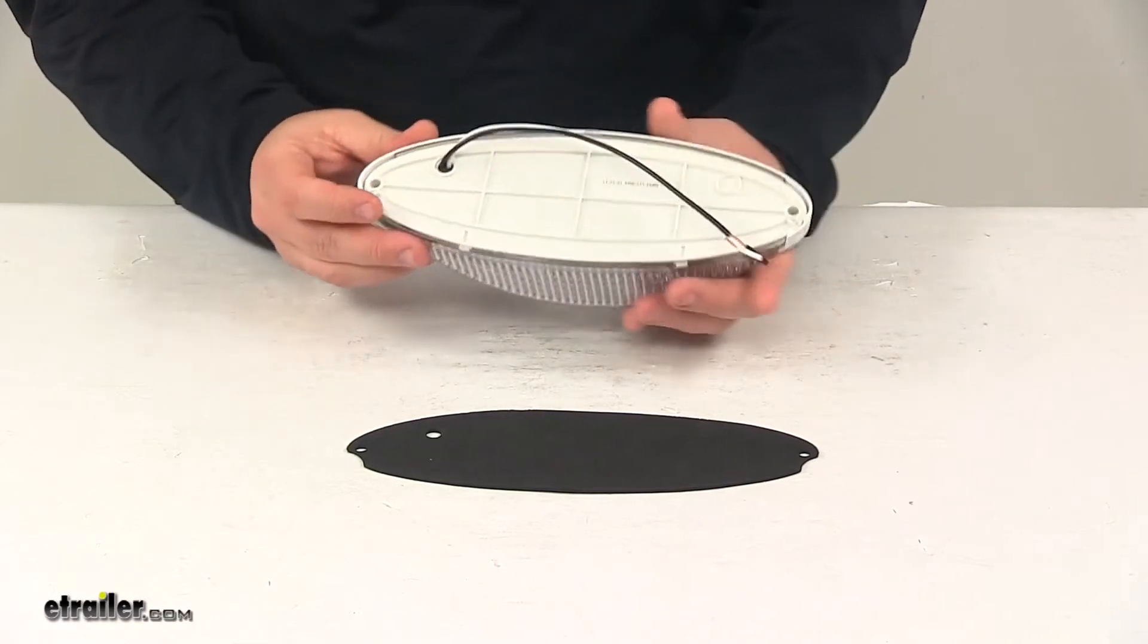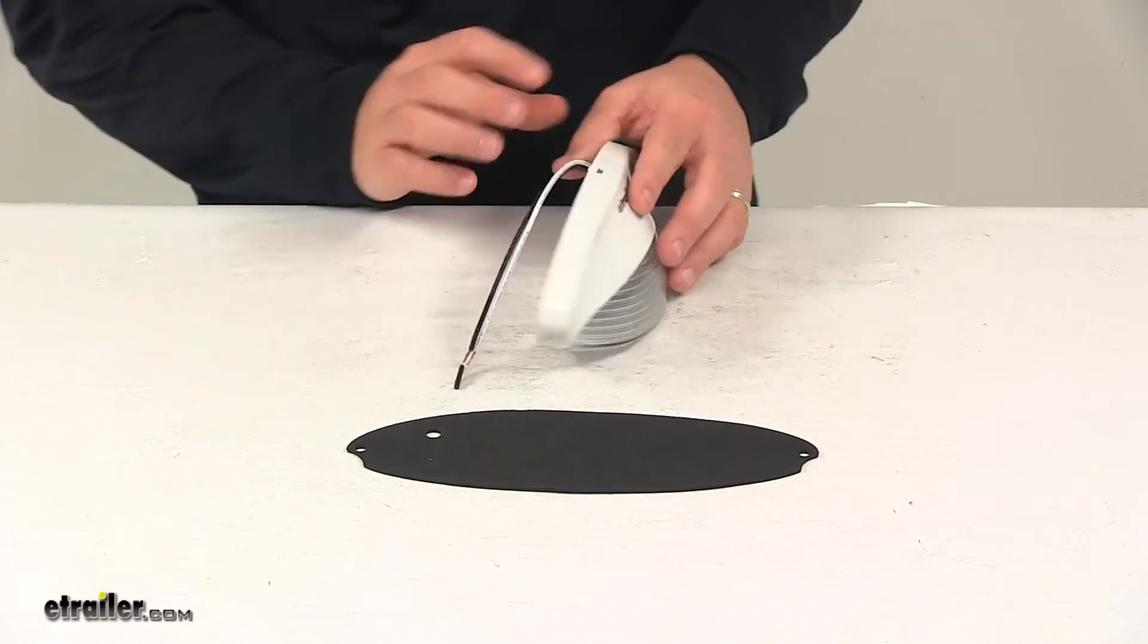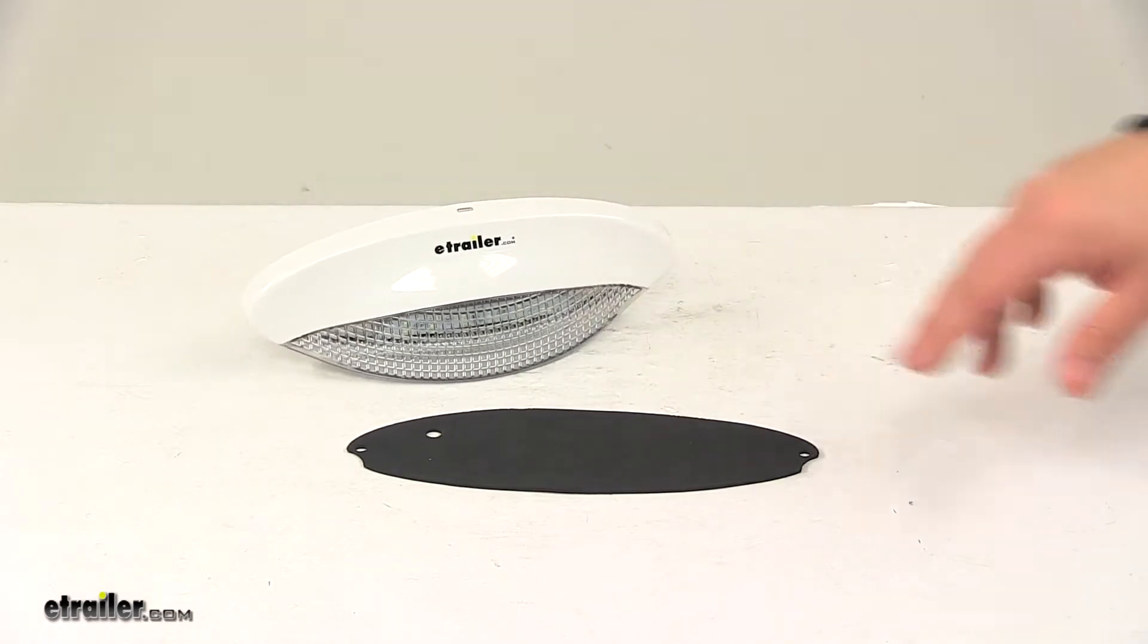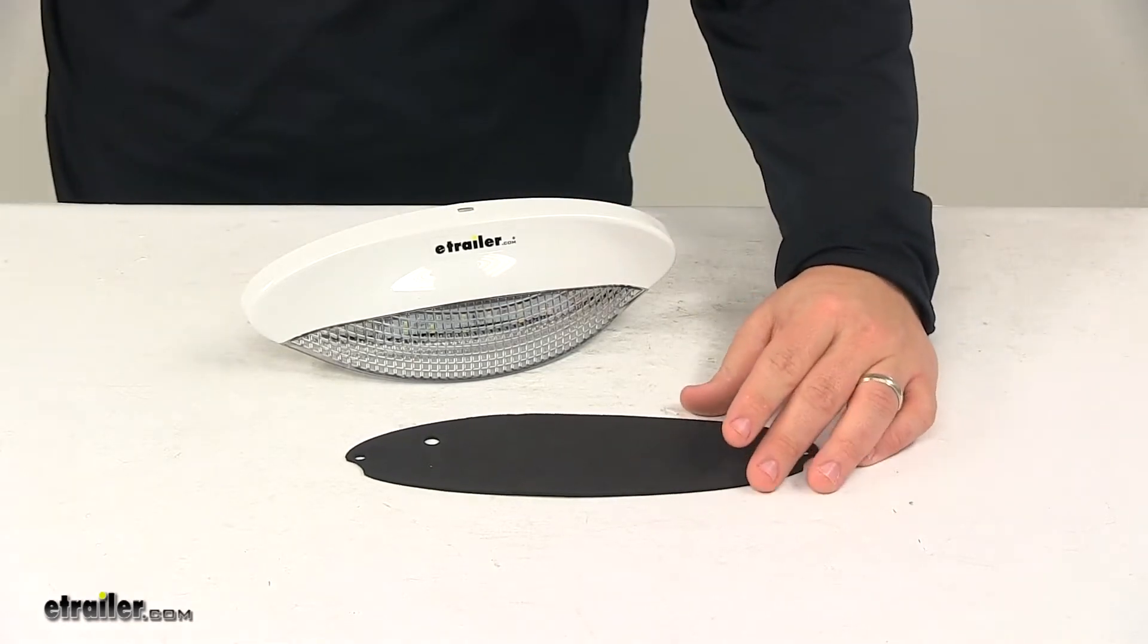When it comes to the installation, it's a surface mount installation so you've got your mount holes located right here. Now to gain access to those mount holes you just need to pop off that white plastic piece on the front there. It comes with that gasket which is that foam piece and that provides some cushion at the mounting area.